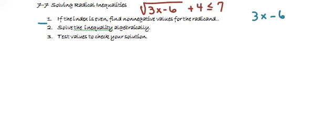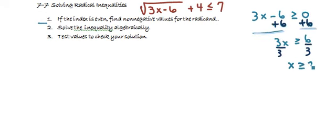In this case, that means 3x minus 6 must be greater than or equal to 0. Our result, then, is finding that x must be greater than or equal to 2.